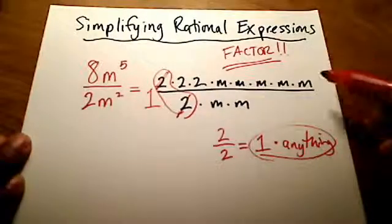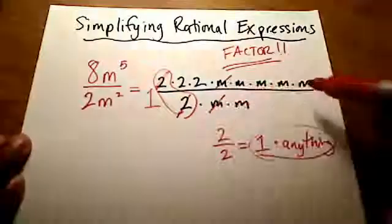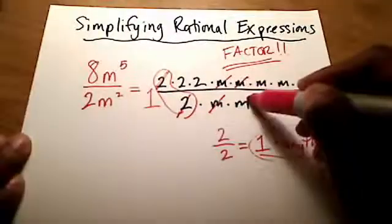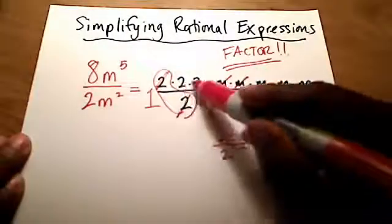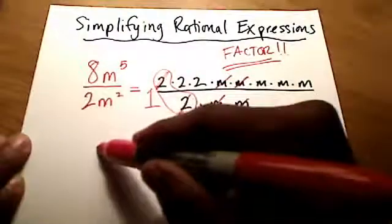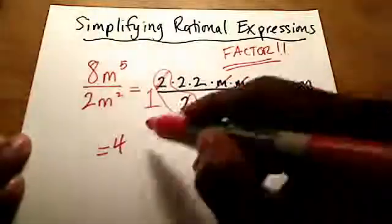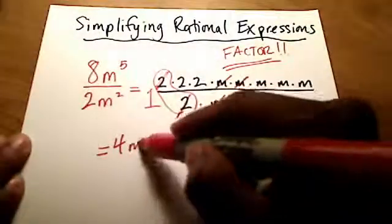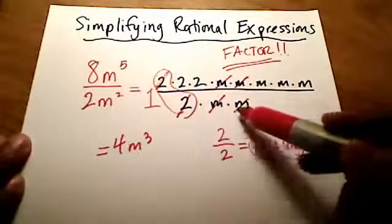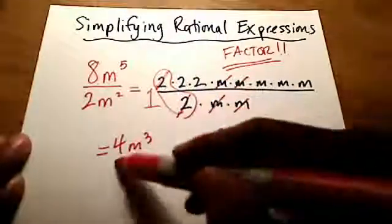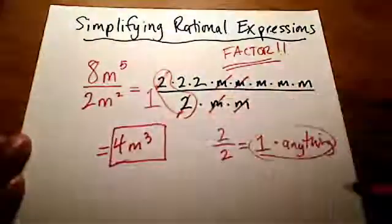Is there anything else we can cross out that cancels? Yeah — these m's can go, and these m's can go. So what we're left with in the numerator is 2 times 2, which is 4, and we've got 3 m's, so that's m to the third. And that's it — we have nothing left in the denominator. Everything crossed out down below. That's our final answer.